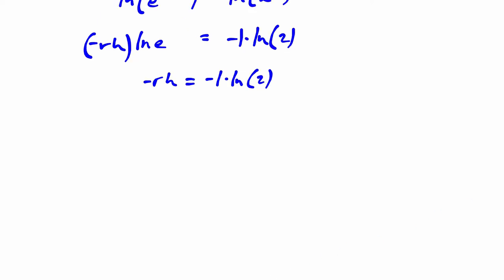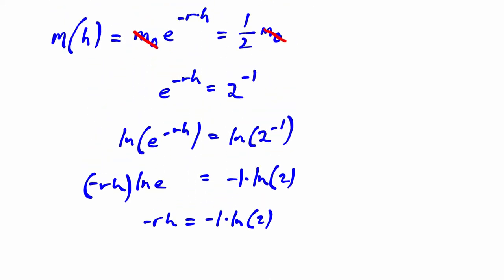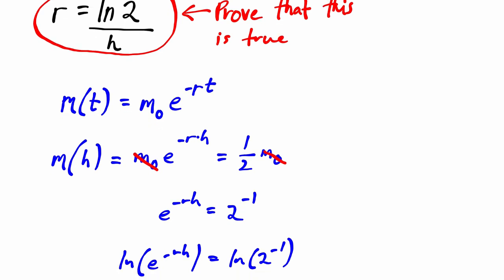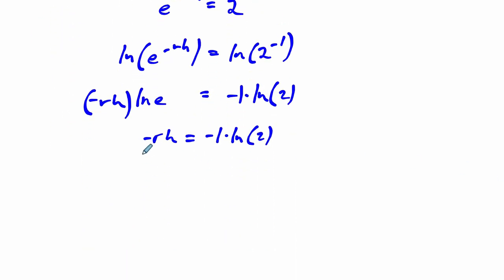And if we go back to our goal for our proof, we're trying to show that r equals the natural log of 2 over h. So let's get r all by itself. I can do that by dividing by negative h on both sides. On the left-hand side, the h's cancel out and the negatives cancel out, and all that's left is r. So we've isolated r.